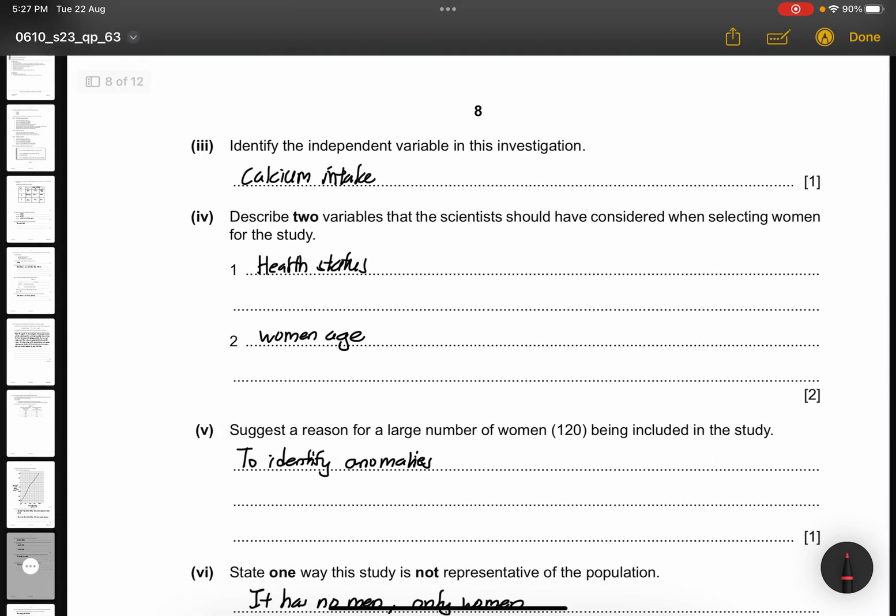Part 3. Identify the independent variable in this investigation: the calcium intake. Part 4. Describe 2 variables that the scientists should have considered when selecting women for the study. The health status of the woman and the age of the woman.